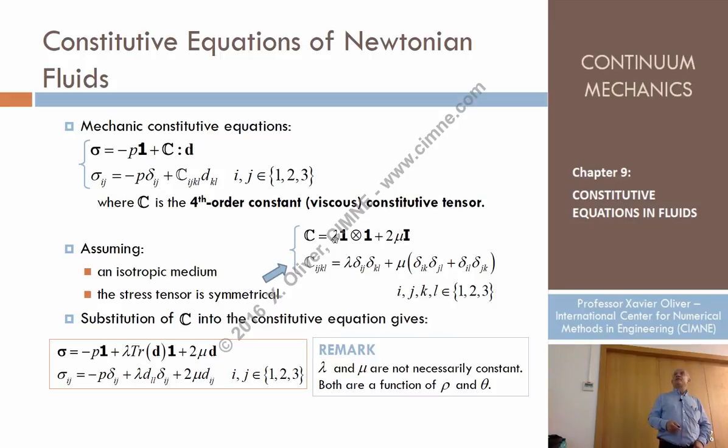If this viscosity is equal to zero, or they are negligible, what can we say about this term? For null viscosities, null lambda mu, what can we say? Zero. So, the fluid is perfect. A perfect fluid is a non-viscous fluid. That is the point.